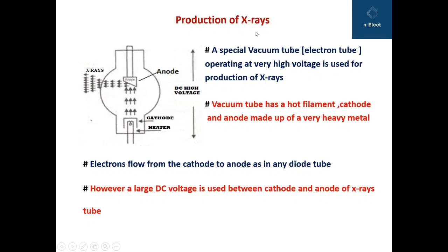Now moving on to the production of X-rays. Here you can see a glass tube of a special kind, a special vacuum tube also called an electron tube, which operates at very high voltage and is used for the production of X-rays.